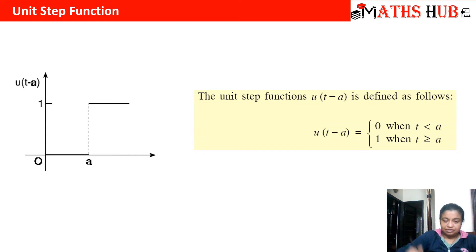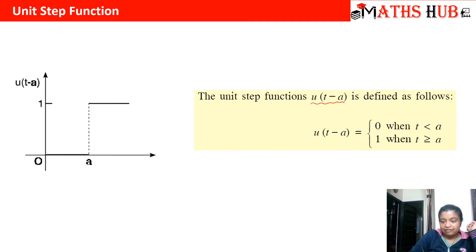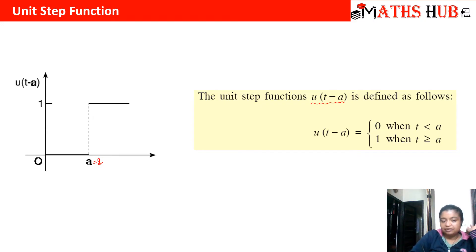How do we define a unit step function? A unit step function u(t minus a) — this is the notation — is defined as: u(t minus a) equals 0 whenever t is less than a, and equals 1 whenever t is greater than or equal to a. If a equals 1, that point is marked at 1; if a equals 2, it is marked at 2. Whatever the value of a is given, we can define our unit step function accordingly.